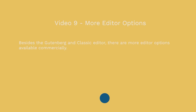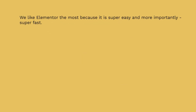There are other plugins with different editors that look really nice. Some of them include Thrive Themes, WP Bakery, and Elementor. Each has its pros and cons, strengths and weaknesses, and it really comes down to which one you like best. Most of these are very similar to Gutenberg and utilize blocks, but they look a lot nicer and have a lot more options.